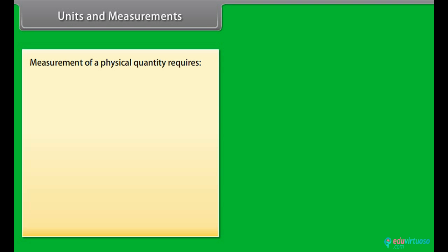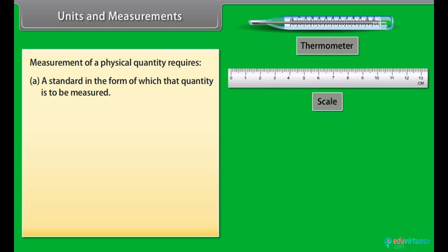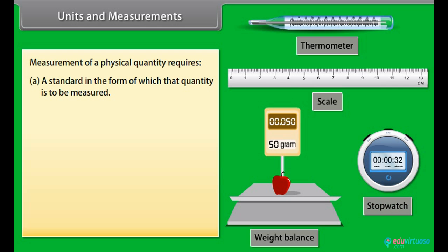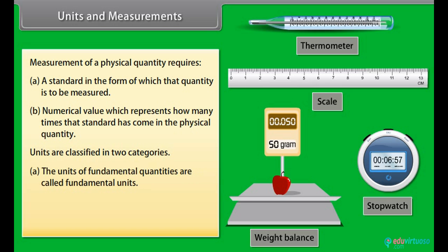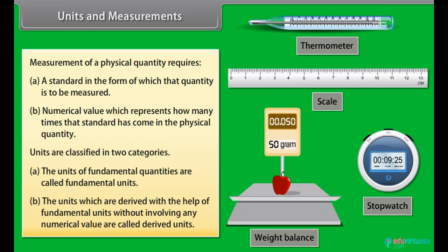Units and measurements. Measurement plays a very vital role in the study of physics. Measurement of a physical quantity requires: A. A standard in the form of which that quantity is to be measured. B. Numerical value which represents how many times that standard has come in the physical quantity. Units are classified in two categories: A. Fundamental units, and B. Derived units. The units of fundamental quantities are called fundamental units. The units which are derived with the help of fundamental units without involving any numerical value are called derived units.